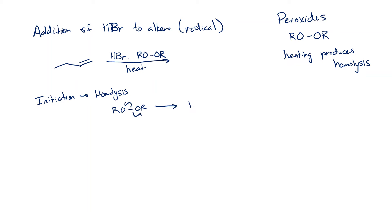one electron goes to this oxygen, and we get these radical products. So no radical in the starting material, radical in the products. We have two heteroatoms — two oxygens connected to each other by a sigma bond. When we introduce energy, this time in the form of heat, we homolize that bond. It will fragment and each oxygen gets a single electron.